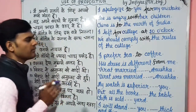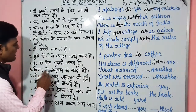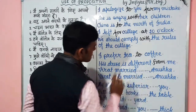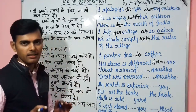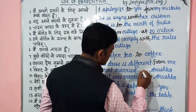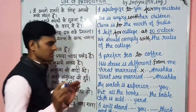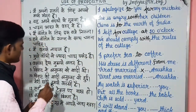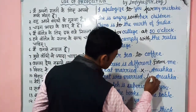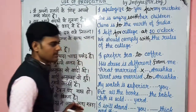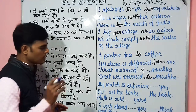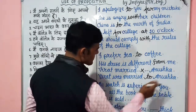Virat married Anushka — यहाँ कोई preposition नहीं लगता। लेकिन यदि passive हो — Virat was married to Anushka — तो 'to' देना जरूरी हो जाता है। हमेशा ध्यान रखेंगे: 'with' नहीं होगा, 'to' होगा।